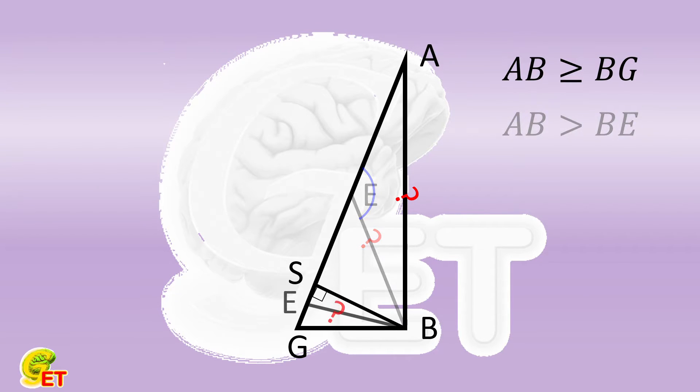If E is between S and G, for the same reason, BG must be longer than BE. Then AB is even longer than BE. So AB and BE cannot be equal.